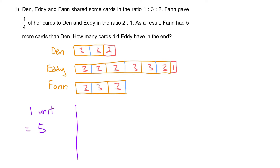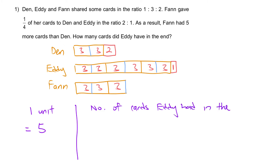From here, moving on — how many cuts did Eddie have in the end? Eddie had 3, 6, 9, 12, 15, 18, 19 units. Number of cuts Eddie had in the end: 5 times 19, which is 20 times 5 = 100 minus 5 = 95.